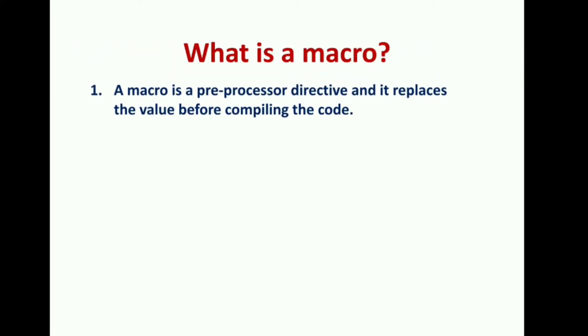The answer is: a macro is a preprocessor directive and it replaces the value before compiling the code. Before compiling, it will just replace the value for whatever you have initialized. One of the major problems with macros is that there is no type checking.